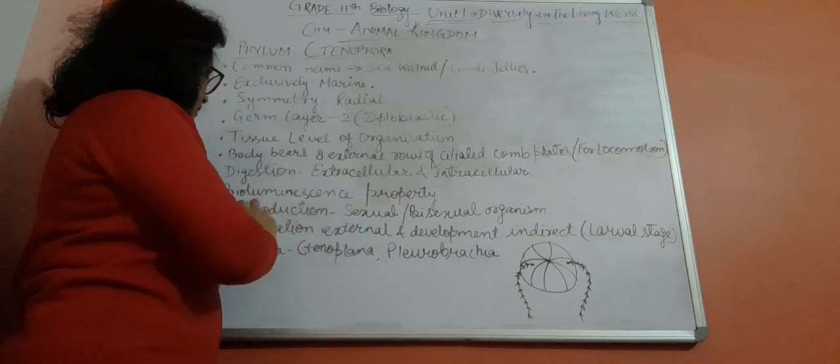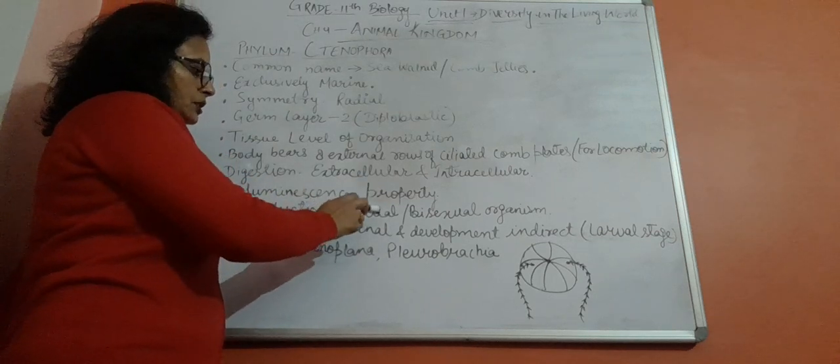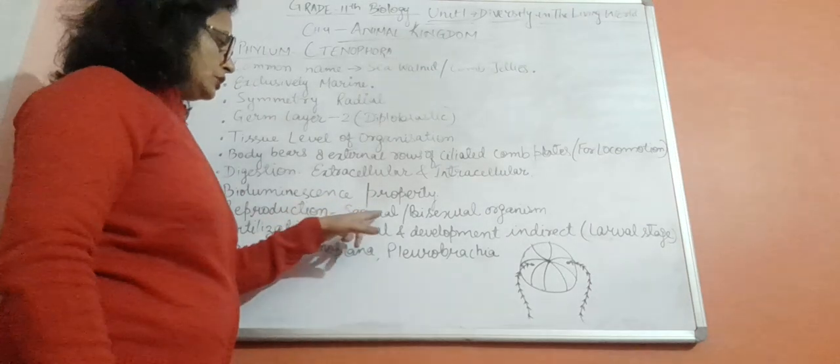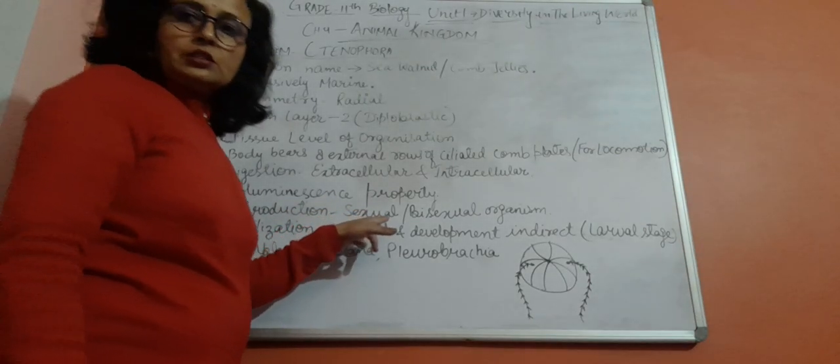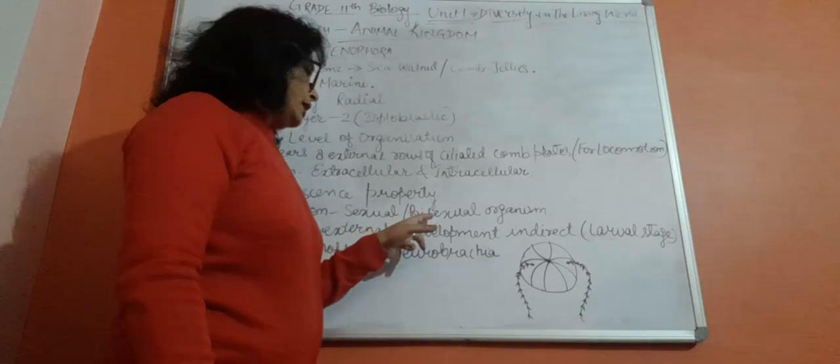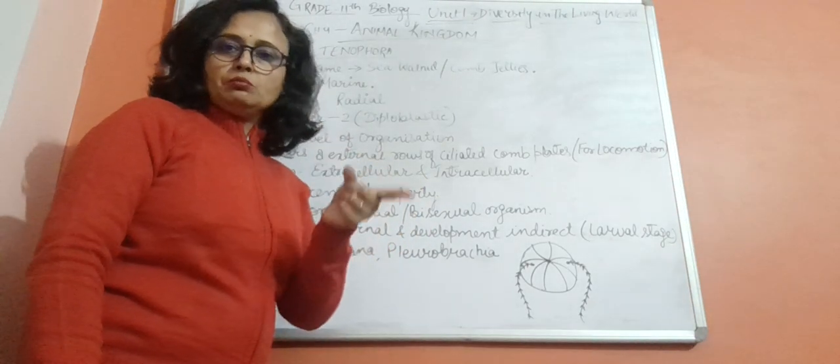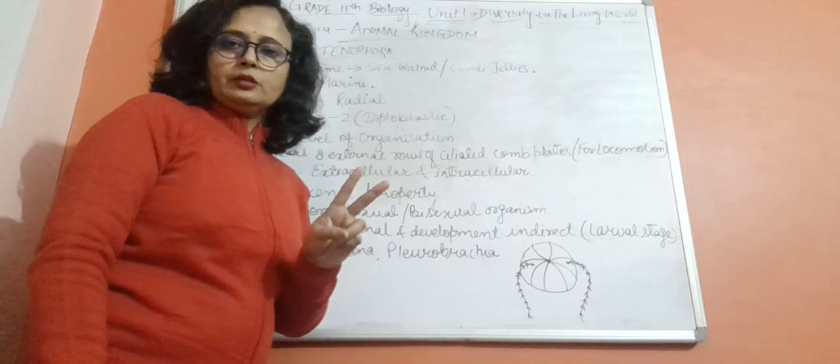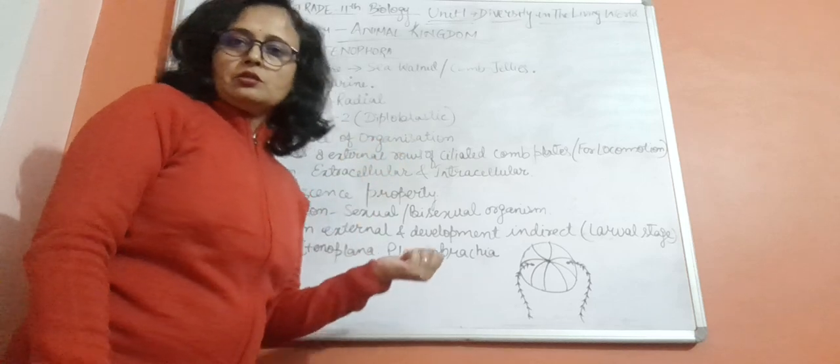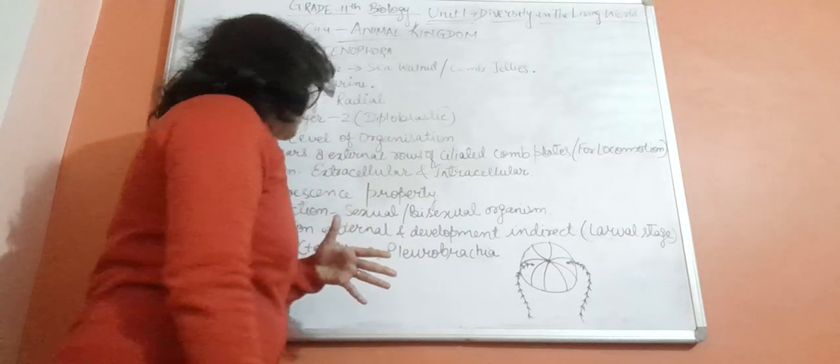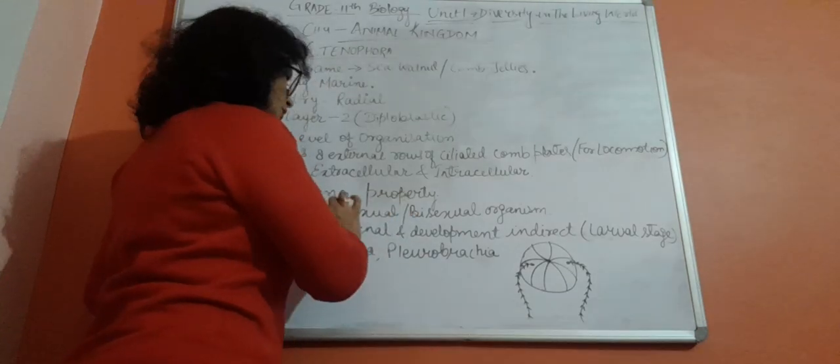Reproduction is sexual. No asexual reproduction is found. These are bisexual organisms, meaning male and female both exist in one body. Bisexual is also called hermaphrodite.